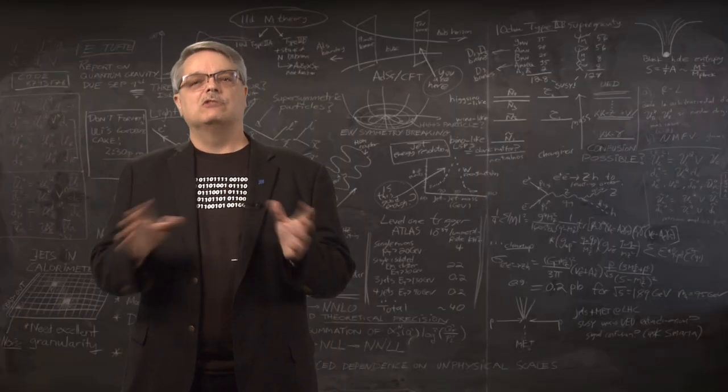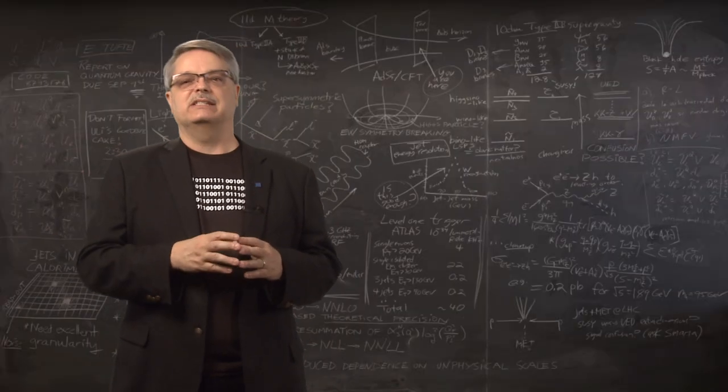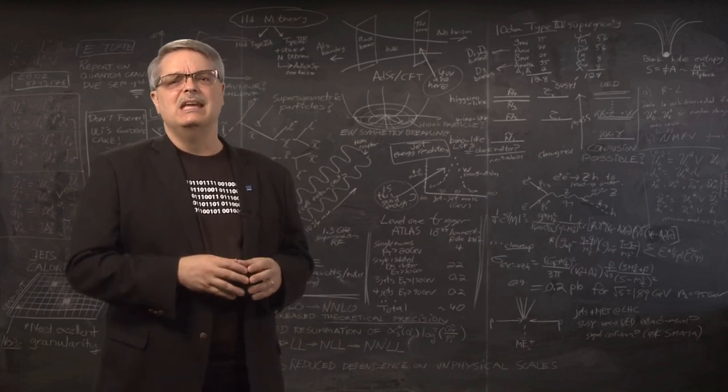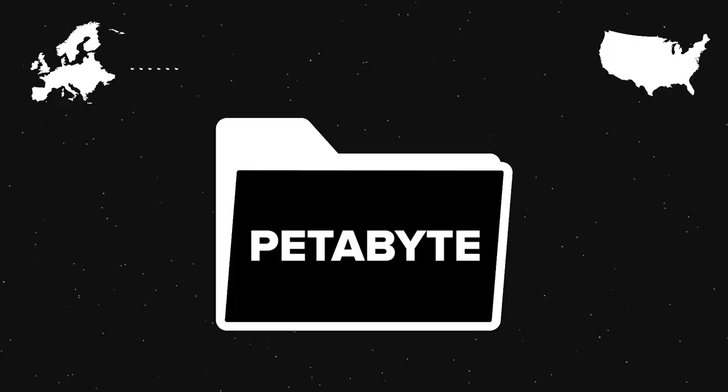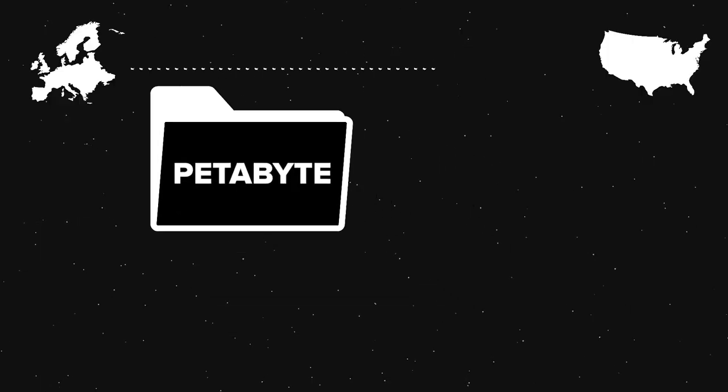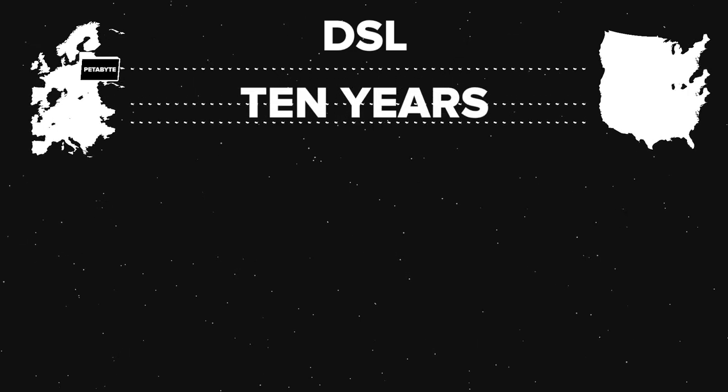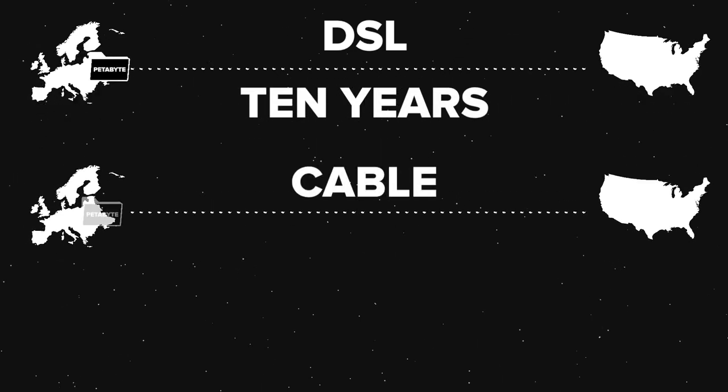If you're going to be shipping data all across the world, you need excellent connectivity. You really do need primo networks. To give you a sense of scale, if you needed to send a petabyte of data from Europe to the US using DSL, it would take 10 years. Even using the network cable connection you might have to your house would take 8 months.